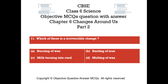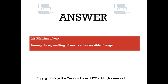Question number 11. Which of these is an irreversible change? Option A: burning of wax. Option B: rusting of iron. Option C: milk turning into curd. Option D: melting of wax. The right answer is Option D: melting of wax. Among these, melting of wax is an irreversible change.